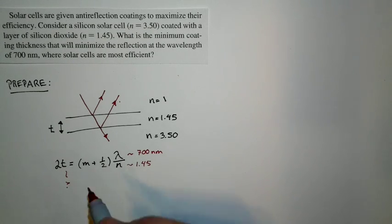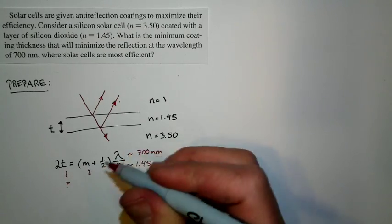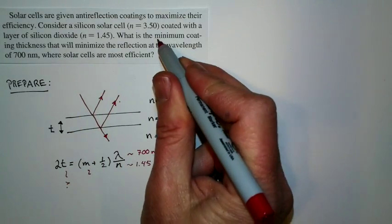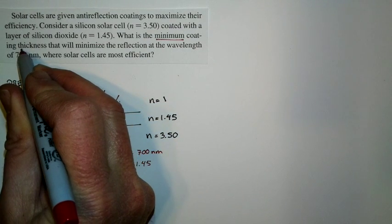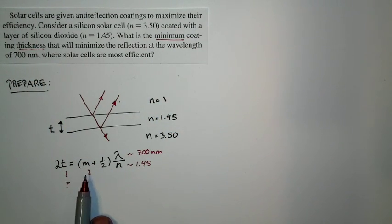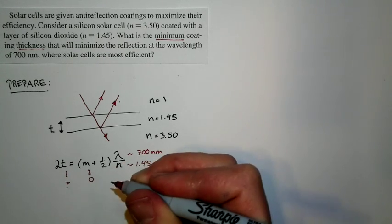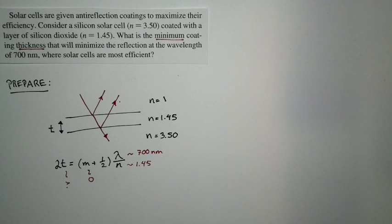The other thing to think about in this equation is m. And what do we want to use for the value of m? Well, here's the thing. We're asked to find the minimum thickness. So if we're looking for the minimum thickness, I want the smallest possible value of m. Well, the smallest possible value of m, of course, is just zero. And so our condition just reduces to this.